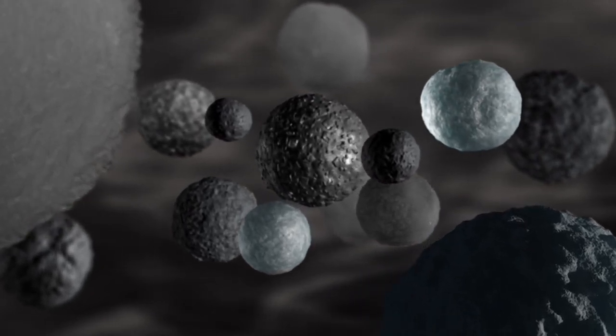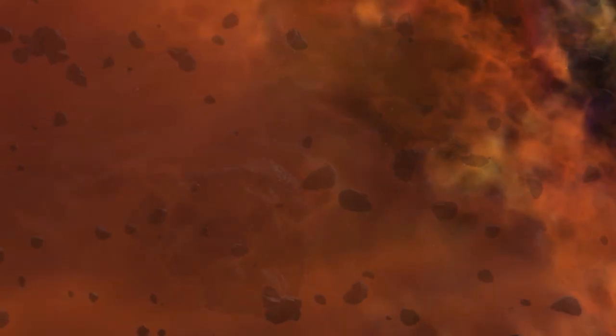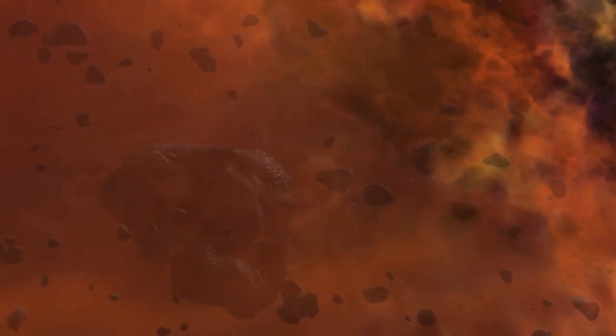Coaxed by gravity and turbulence, the chondrules clump. They grow into the first asteroids, into mountains, into planets.